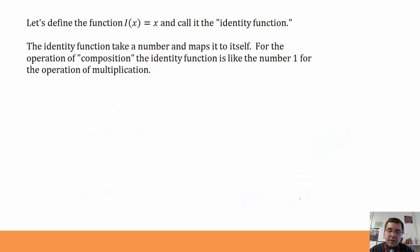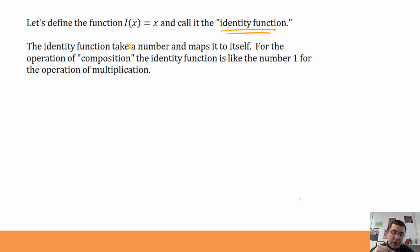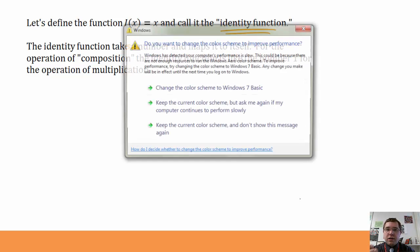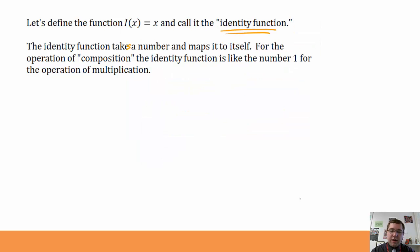Let's define the function i of x to be x. That means it takes a value of x and makes it the output — that same value of x — without doing anything to it. This is called the identity function. The identity function takes the number and maps it to itself: i of 3 is 3, i of pi is pi. For the operation of composition of functions, the identity function is like the number 1 for multiplication — when I multiply a number by 1 it doesn't change, and when I apply the identity function to a number it doesn't change.